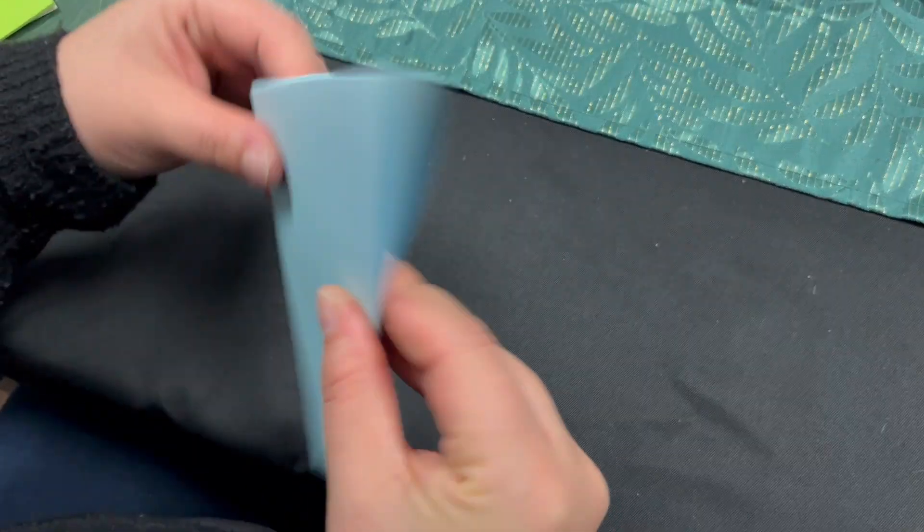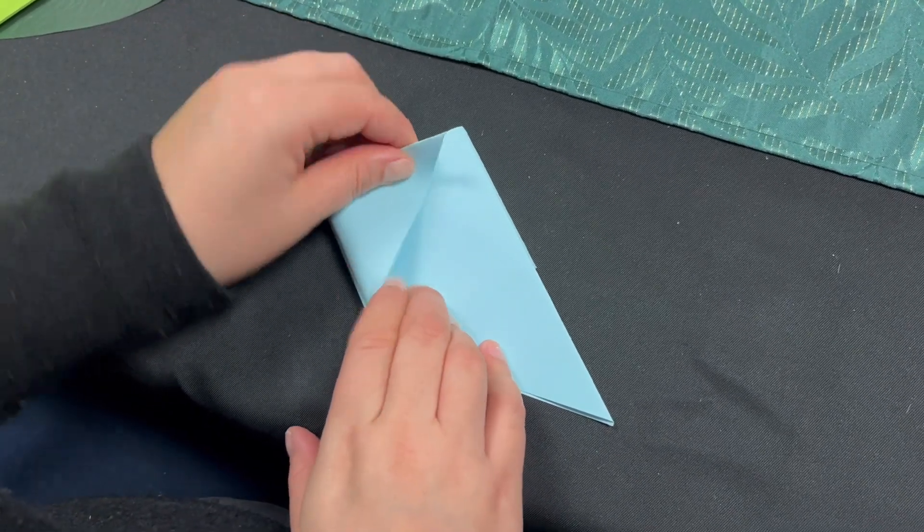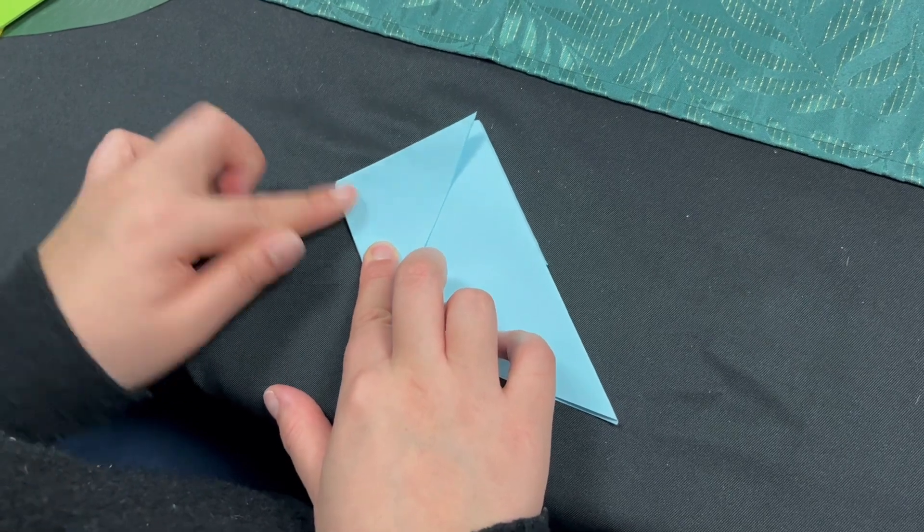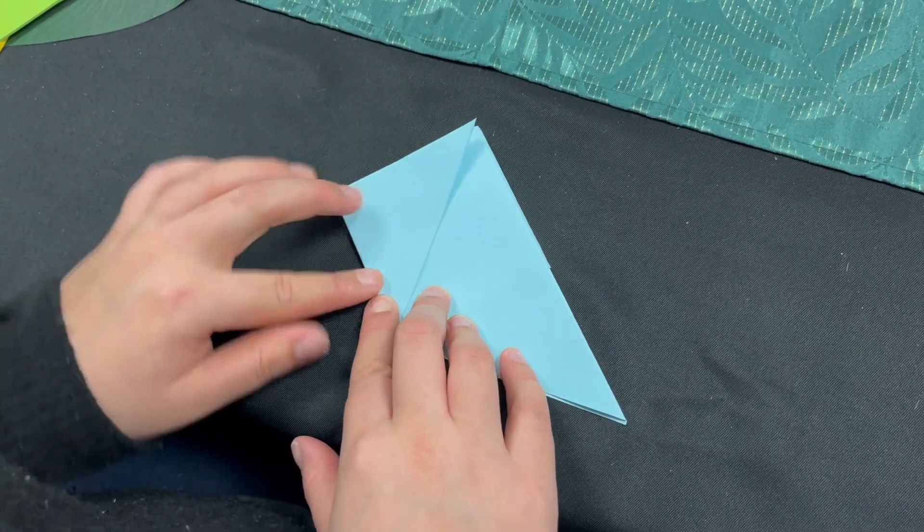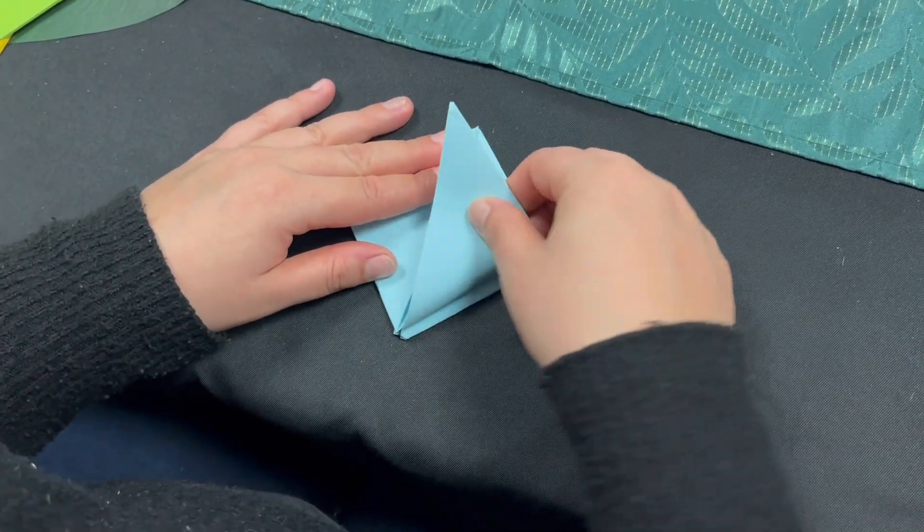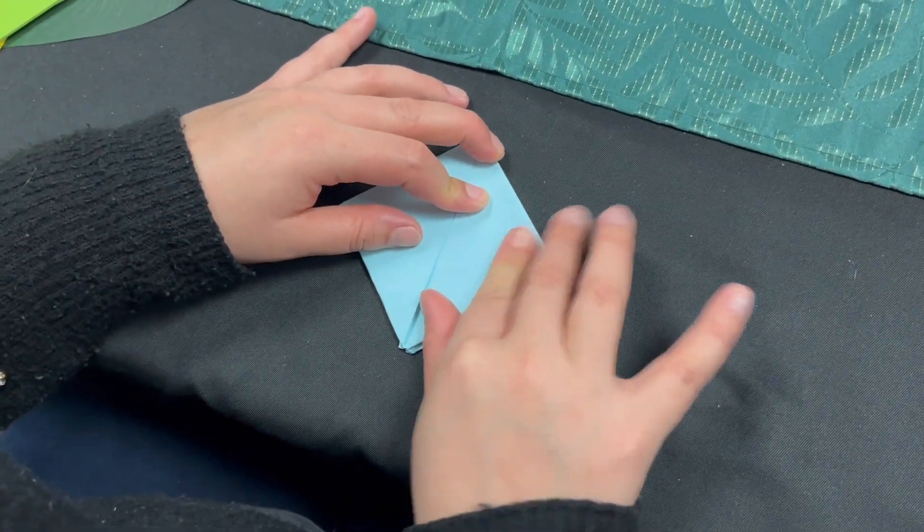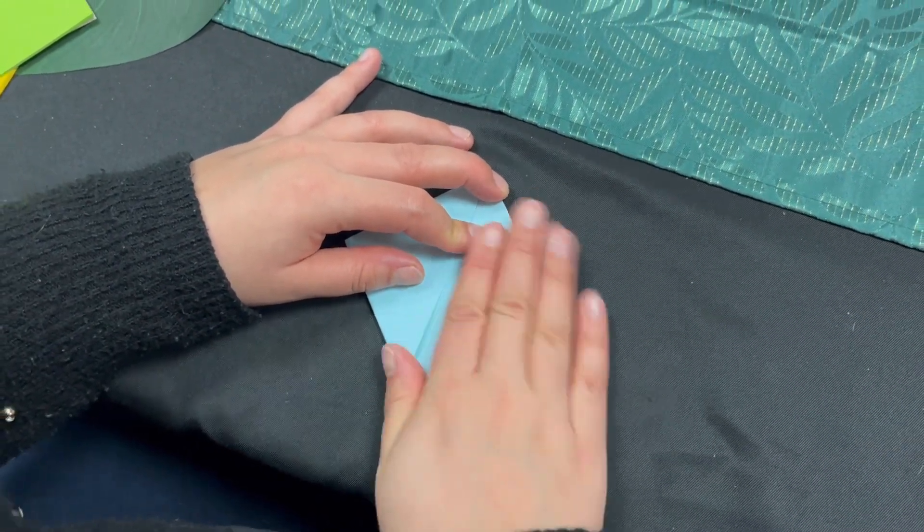Odwracamy papier i znowu z lewej strony do góry zaginamy. U mnie jest ciężej, bo ja mam kartkę grubszą, łatwiej jest ze zwykłej kartki robić.